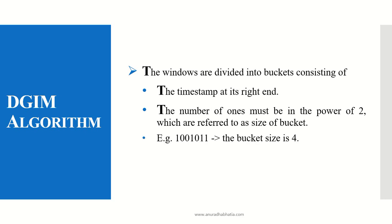For example, consider the sequence 1, 0, 0, 1, 0, 1, 1. This contains four 1s, so we call this a bucket of size 4. We have to actually count the number of ones present in the bit stream.